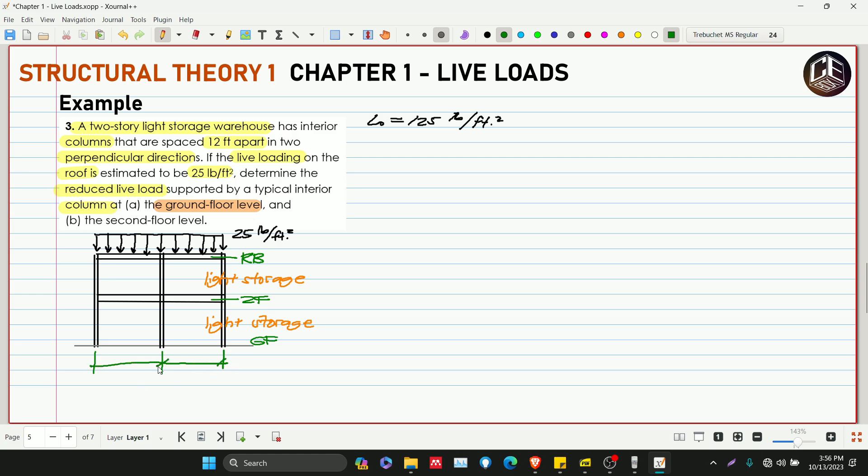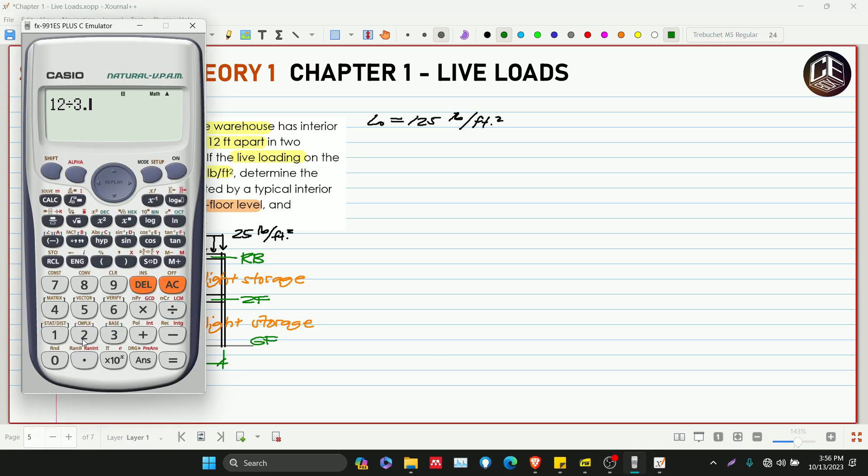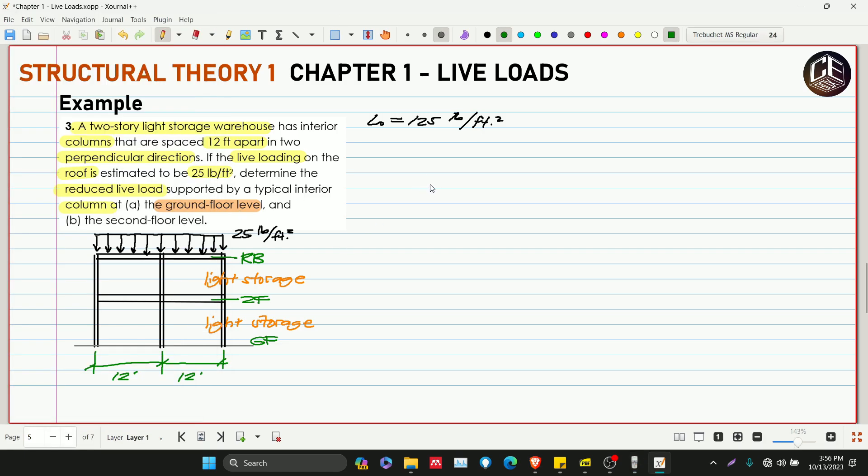Yung ating dimension dito is tig 12 feet. 12 feet divided by 3.28 para maging meters, so this is 3.7 meters. Kunin natin yung ating tributary area at tig kalahate, so tig 6 feet and 6 feet. Area tributary is equivalent to 12 feet multiplied by 12 feet, so this is 144 feet squared.